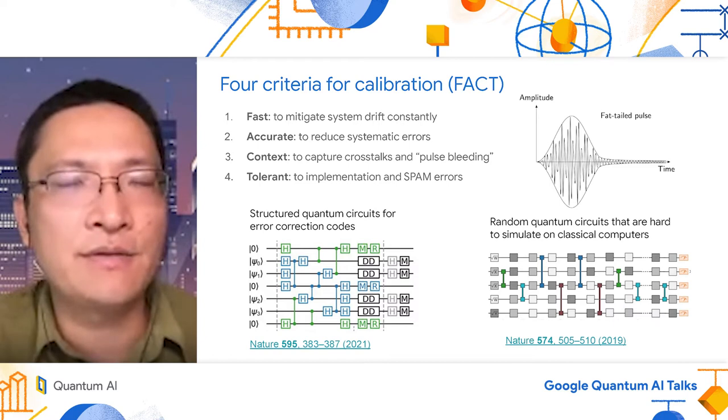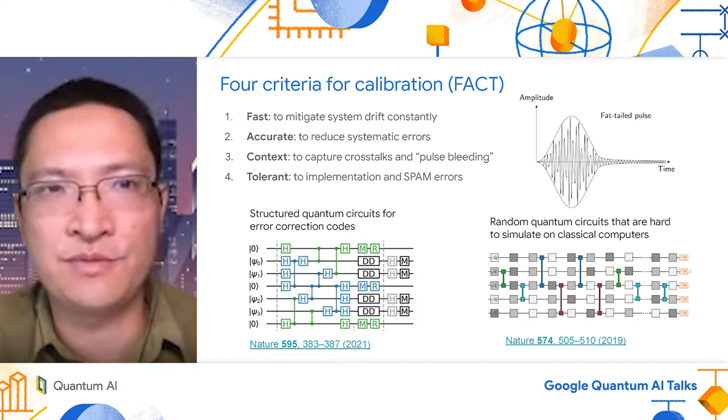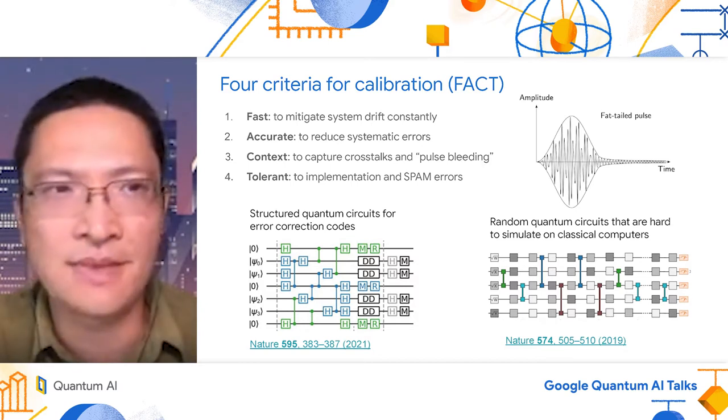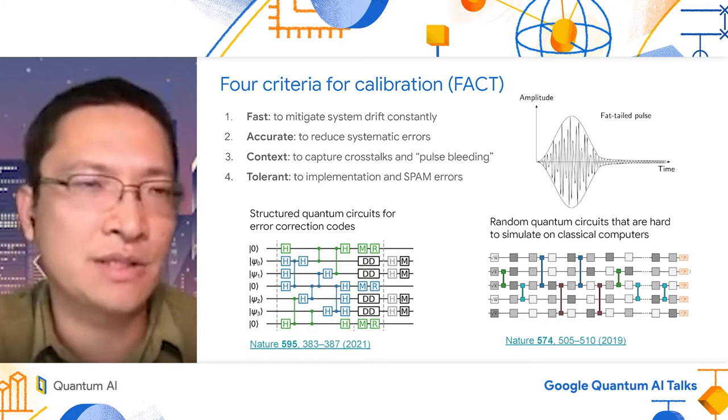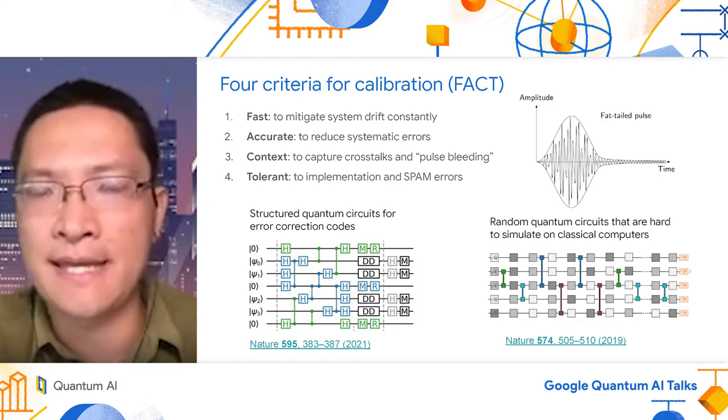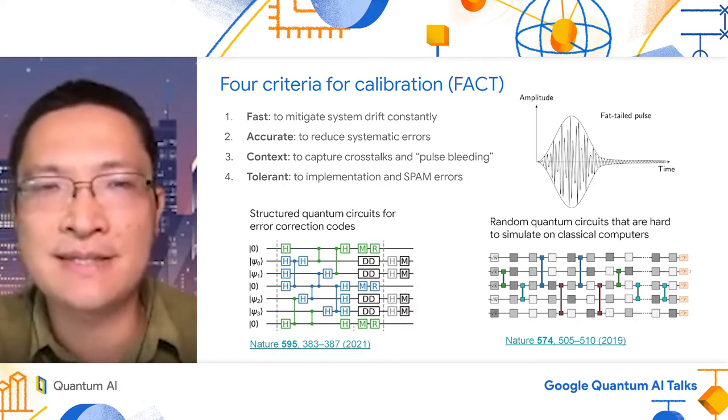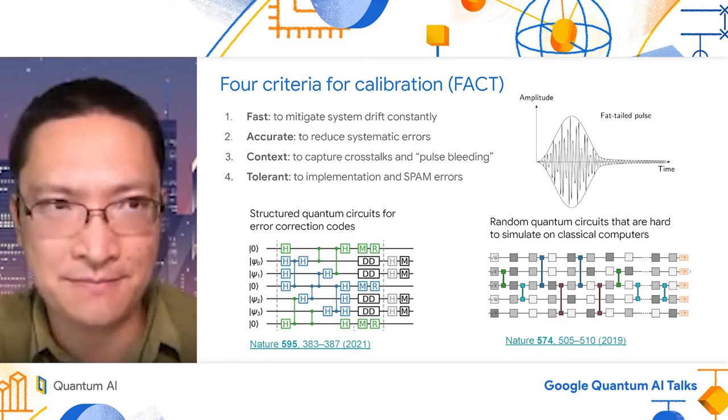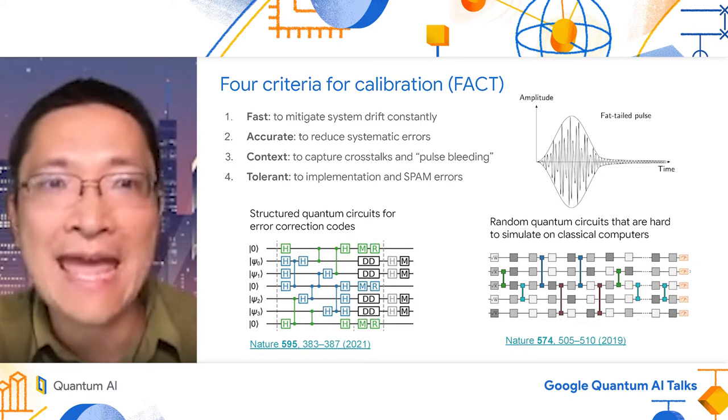There are four criteria for calibration. We call it FACT. The calibration needs to be Fast to mitigate the system drift constantly. It also needs to be Accurate to reduce systematic errors. It needs to capture Context to capture the crosstalk and pulse bleeding in a quantum circuit. Pulse bleeding is because the pulse didn't shut off after the gate is over. It can have a fat tail which can bleed into the next pulse and cause systematic errors. And the fourth criterion is Tolerant to be robust to implementation error and SPAM errors.